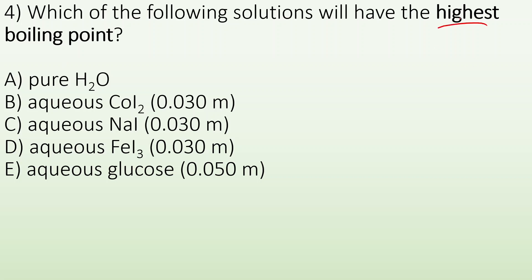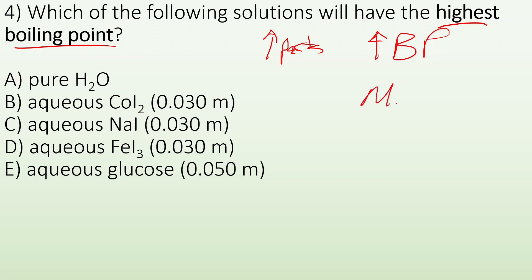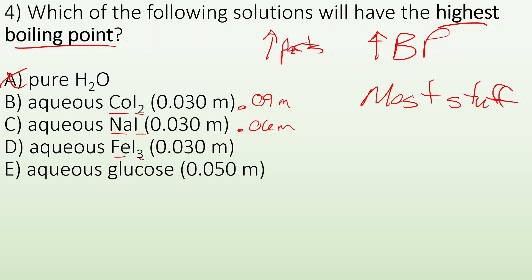Number four — which of the following solutions will have the highest boiling point? As we increase the particles, the boiling point is going to increase, so we want the solution with the most particles. Pure H2O, definitely not. CoI2 breaks up into three particles, giving 0.09 molal. NaI breaks up into two, giving 0.06 molal. FeI3 breaks up into four particles, giving 0.12 molal. Glucose is a non-electrolyte, staying as one particle. So the one with the highest boiling point is aqueous FeI3, because we'd have an equivalent of 0.12 molal concentration of particles.